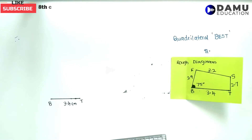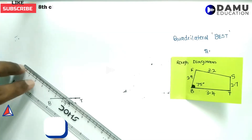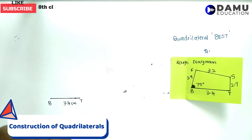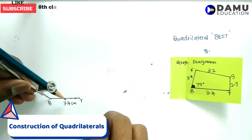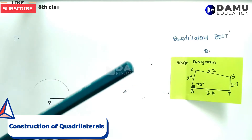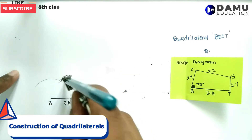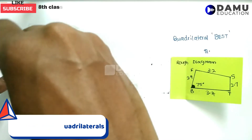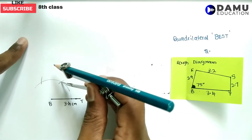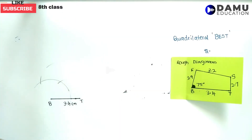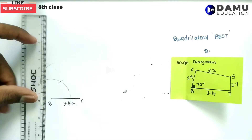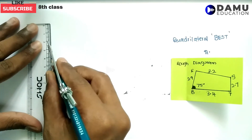Now angle B is 75 degrees. To construct 75 degrees, first construct 60 degrees. From this point, draw one arc without changing the compass radius — this gives 60 and 120. Then draw to bisect this angle. From this bisection, we get the angle of 90 degrees.